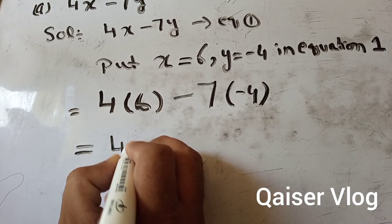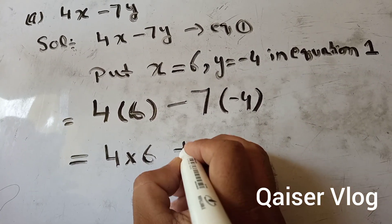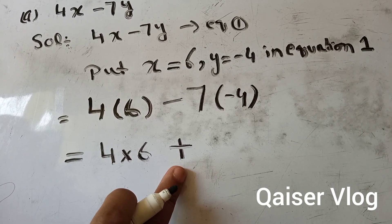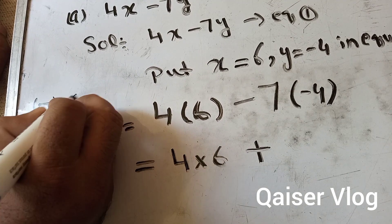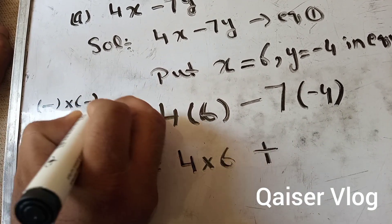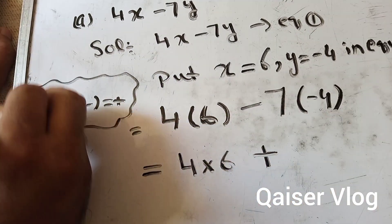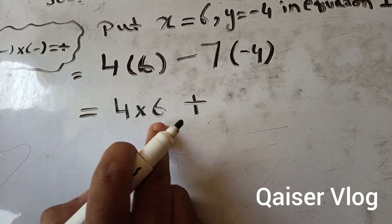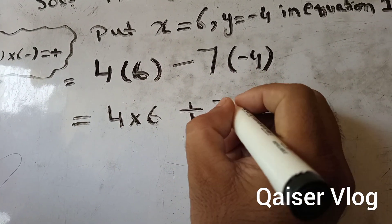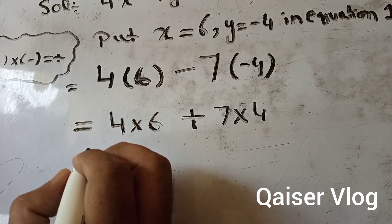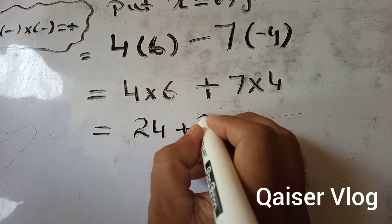We write 4 multiplied by 6, then minus. Now minus into minus will be plus — so I write here: minus into minus equals plus. That's why I write plus here. So 7 into 4.